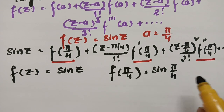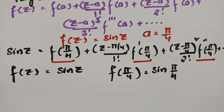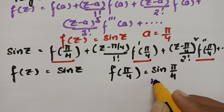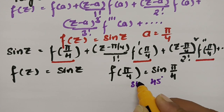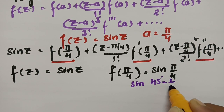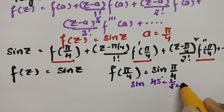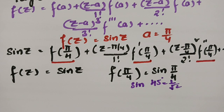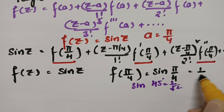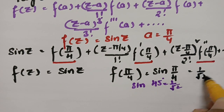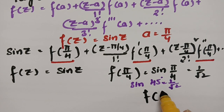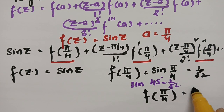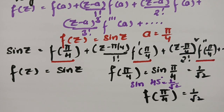π/4 is nothing but 45 degrees, and sin(45°) is nothing but 1/√2. So I am substituting that, and we get the value of f(π/4) = 1/√2.